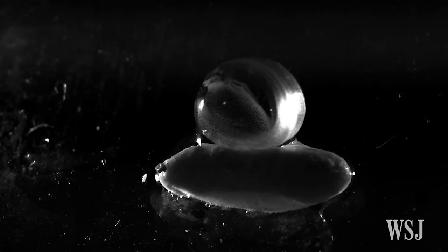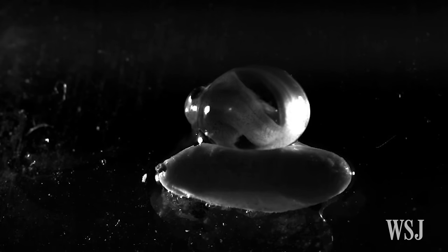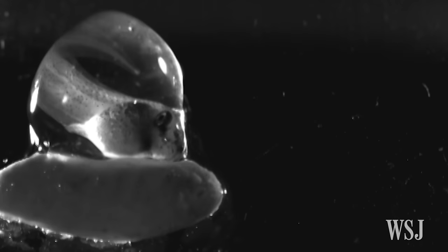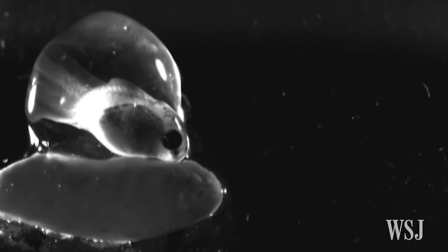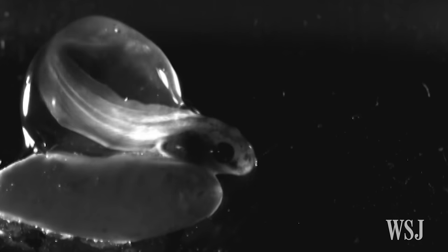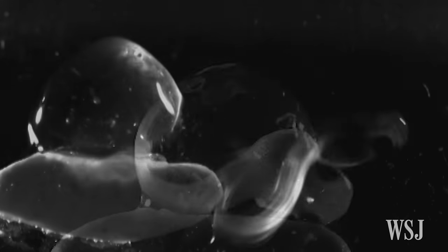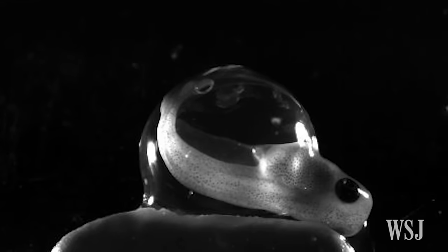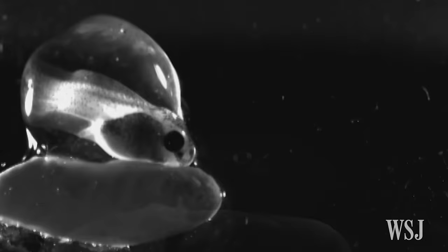First, the scientists allowed the eggs to develop for 5 days before gently shaking them to simulate a predator attack. Using a high-speed camera and scanning electron microscope, the scientists were able to capture how the embryos, sensing an attack, rapidly release enzymes from hatching glands concentrated on their snouts to rupture the egg membrane and then wiggle through the hole to freedom.